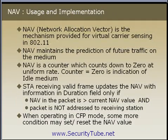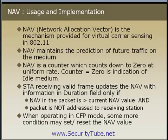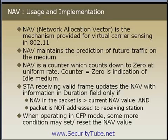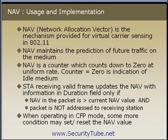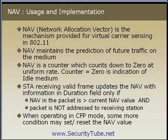NAV, or Network Allocation Vector, is the mechanism provided for virtual carrier sensing in IEEE 802.11. NAV maintains a prediction of future traffic on the medium, so a higher NAV value indicates expected traffic on the IEEE 802.11 media. NAV is a counter which counts down to 0 at a uniform rate, and when equal to 0 it indicates an idle medium. A station receiving a valid frame updates the NAV value from the Duration/ID field if and only if the NAV in the packet is greater than the current NAV value of that station, and the packet is not addressed to that station. When operating in CFP mode, some additional conditions may set or reset the NAV value.